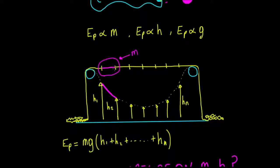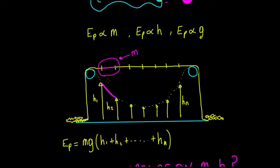Imagine splitting the rope into little elements shown in pink. You can see that the length of an element near the bottom is shorter than the length of an element higher up. So the mass of a lower element is greater than the mass of a higher element, but the height of the lower element is less. We have this interplay between the mass of an element and the height of an element.